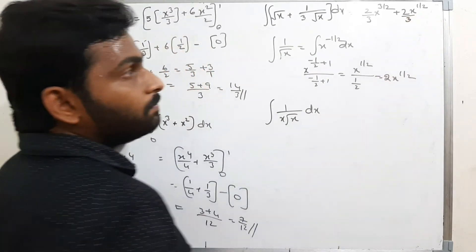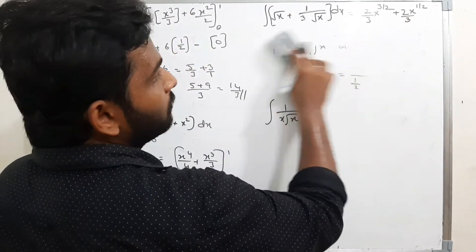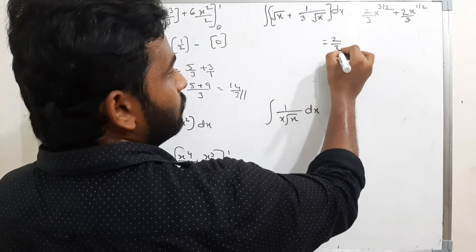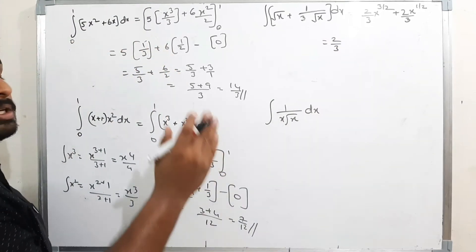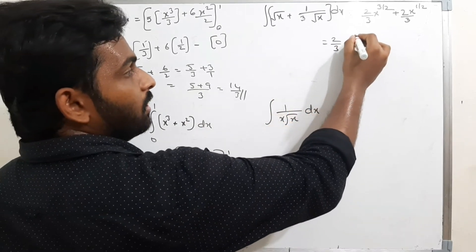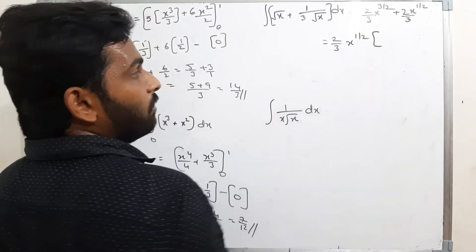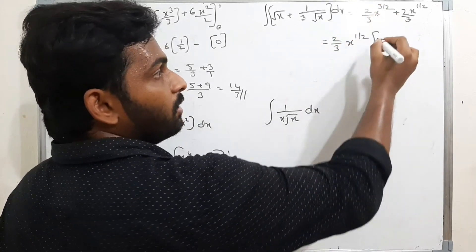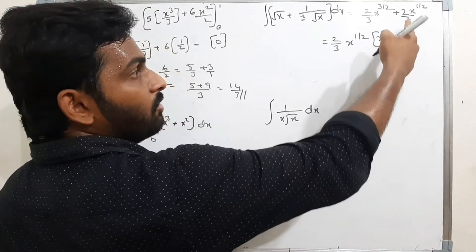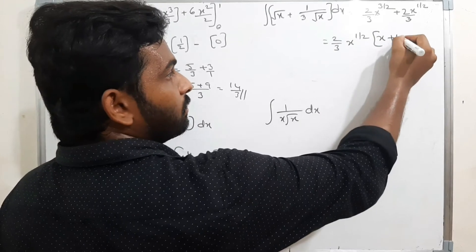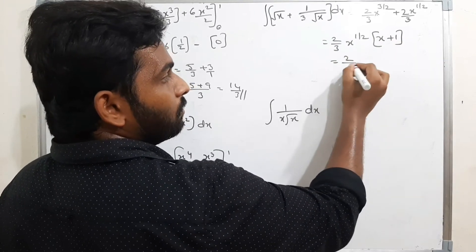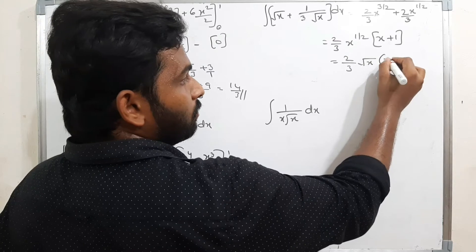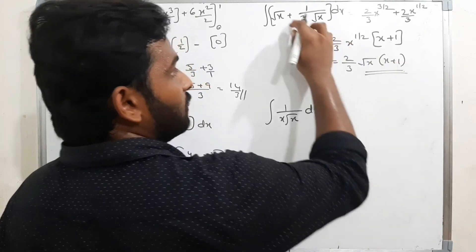Taking 2/3 common, and also taking x^(1/2) common from both terms: x^(1/2) times x gives x remaining, and 1 remains from the second term. Therefore the integration is (2/3)√x(x + 1).